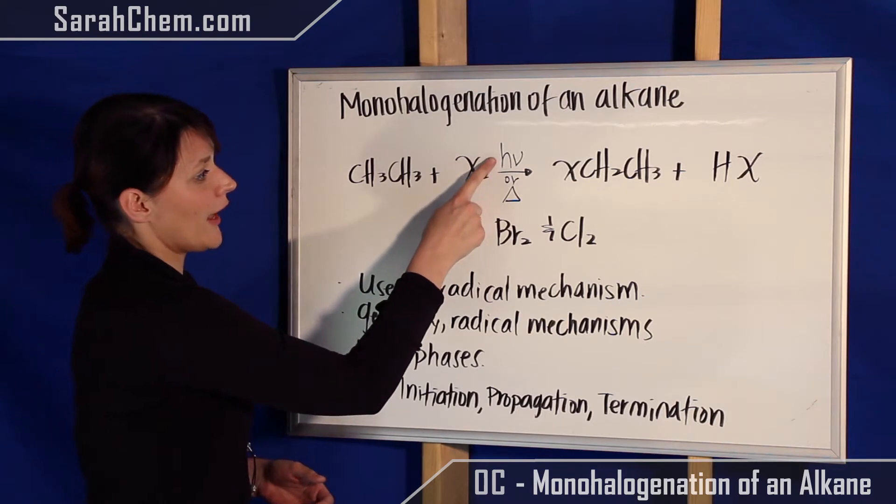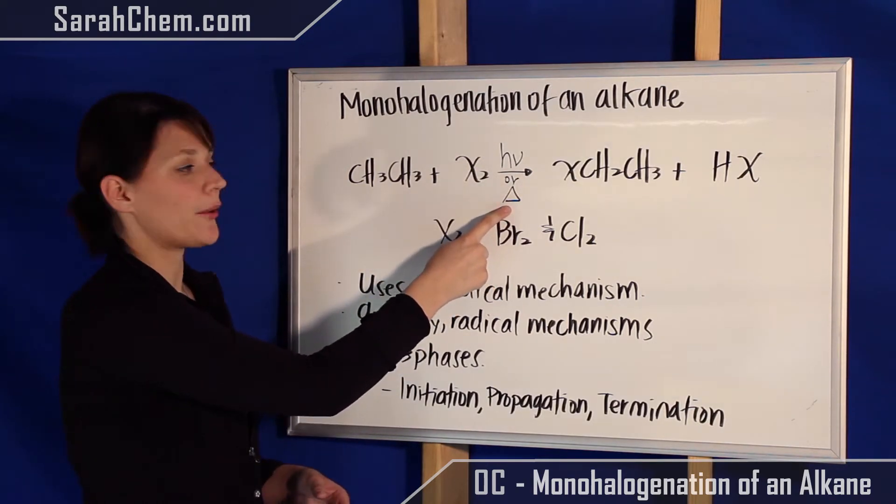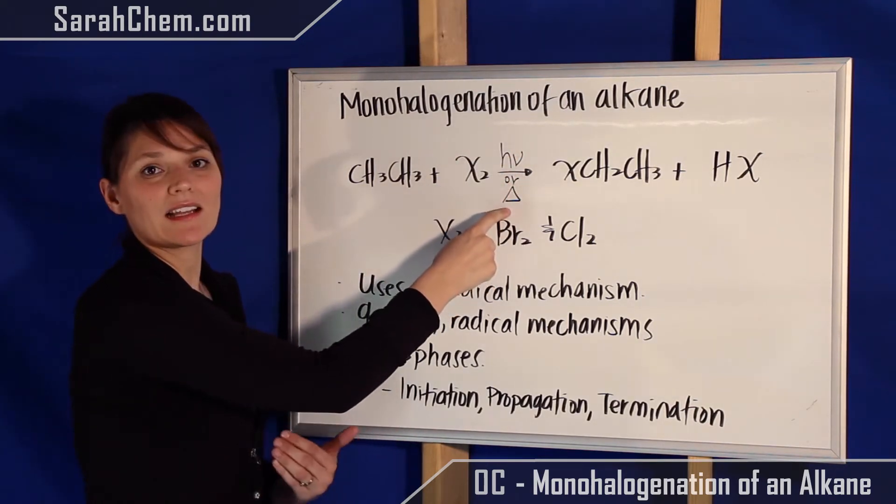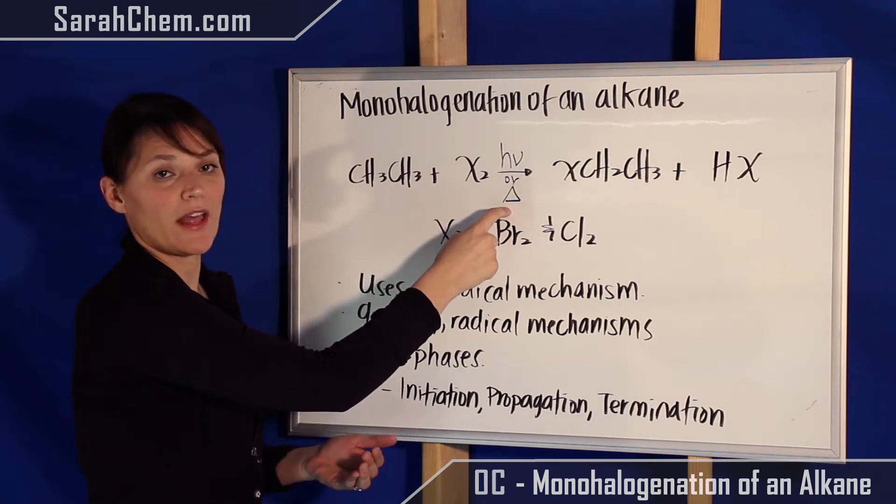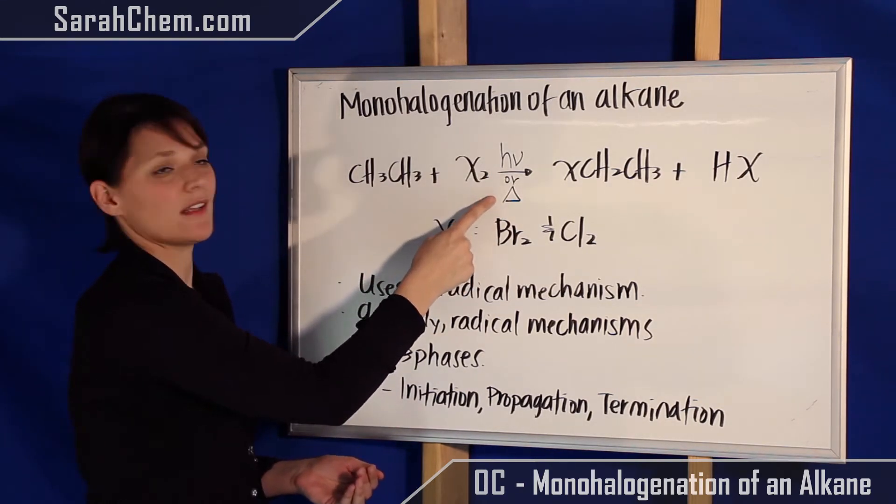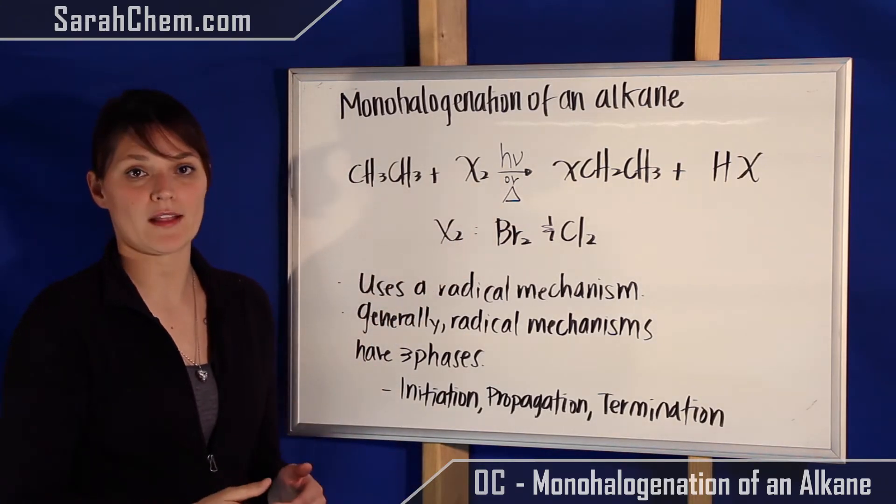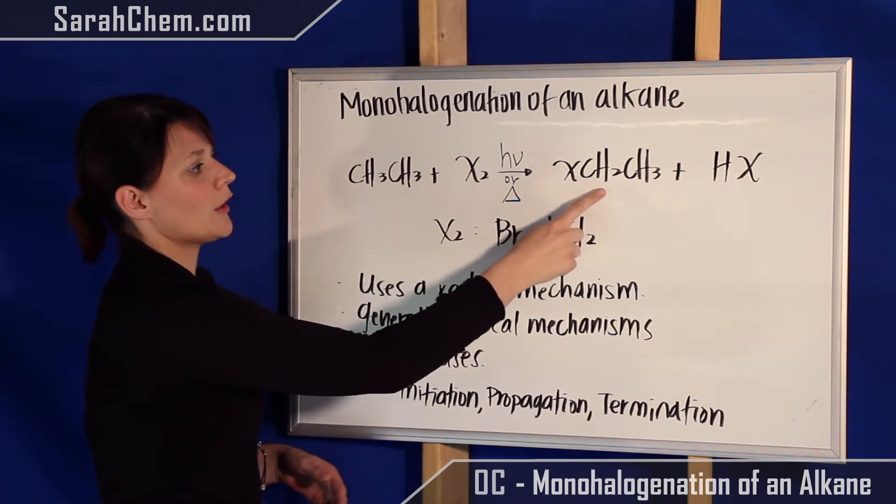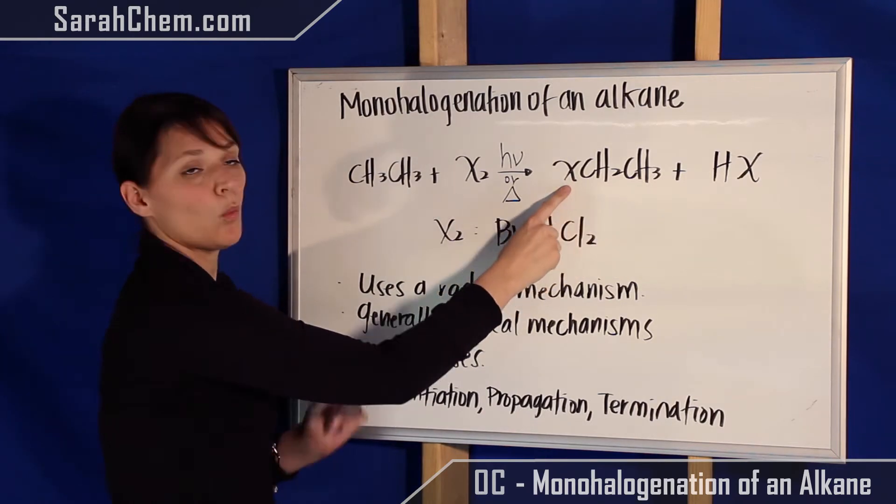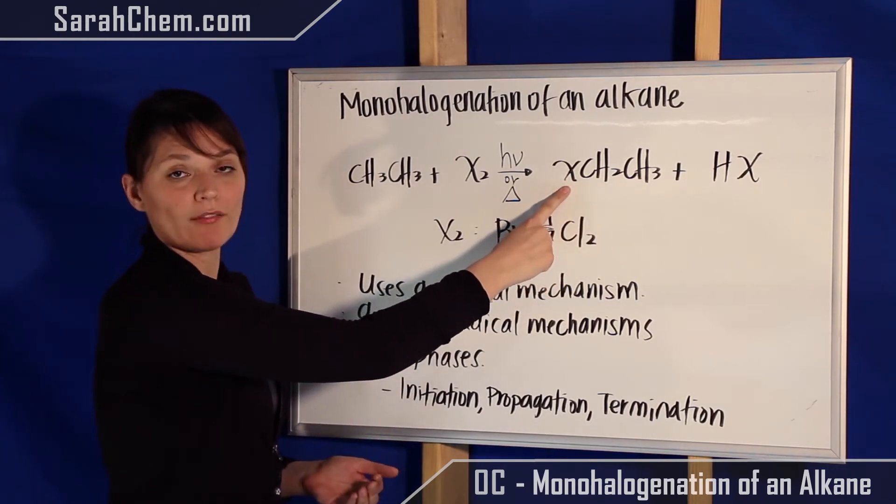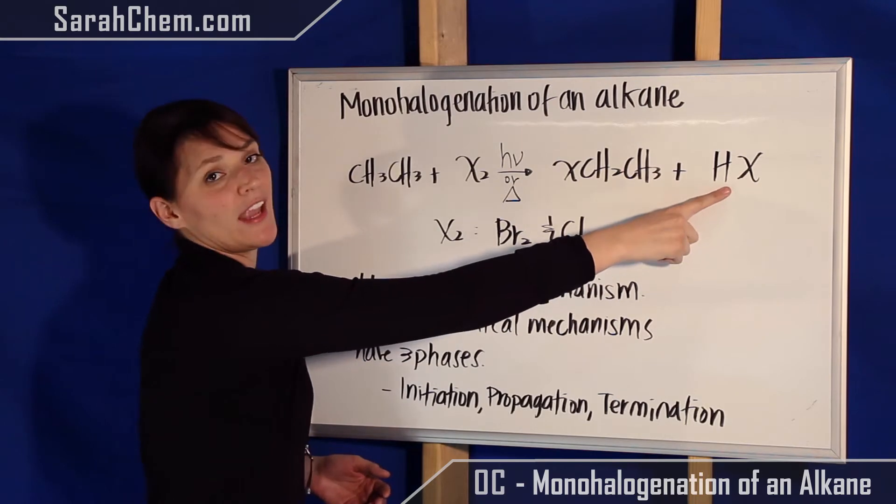You're also going to see either H nu or the delta symbol below. This represents the catalyst that is needed to make this reaction happen. So H nu represents light and the delta symbol represents heat. Either or is fine to be put over that arrow. Ultimately, what we're going to create is an alkane that has one halogen on it, hence monohalogenated, and then we're going to have our HX byproduct.